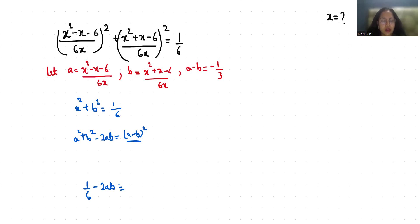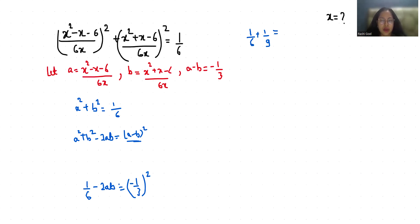So (-1/3)² equals 1/9. Moving terms: 1/6 - 1/3 + 1/9 = 2ab. Therefore ab = 1/36.